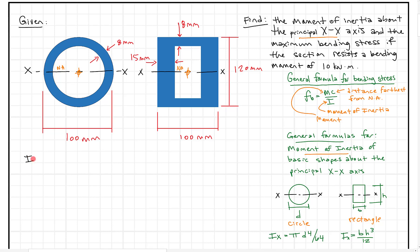For the circle: IX = π × (100 mm)⁴ / 64. But this circle isn't solid, so we have to subtract off the inside. The inside diameter is 100 mm minus the wall thickness of 8 mm on each side, so 100 mm minus 2 × 8 mm, which gives us 84 mm. So we subtract π × (84 mm)⁴ / 64.